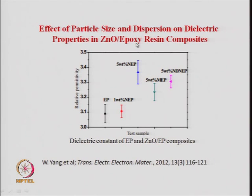A further example shows a polymer resin with zinc oxide: adding one or five weight percent of ZnO nano particles gives much larger permittivity compared to plain epoxy. With this, we close today's lecture — the fifth lecture of module 4, covering two lectures on dielectrics. The next lecture will look at magnetic nanoparticles and properties of magnetic nanoparticles. Thank you.